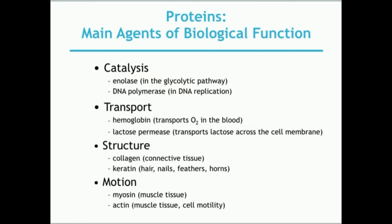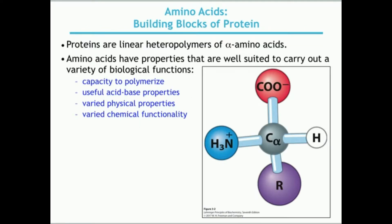What are proteins used for? The first point on this slide basically sums it up: proteins are linear heteropolymers of alpha amino acids. Just as you would see beads on a string on a necklace, proteins are strings of amino acids that have been polymerized together. They can be very small or very large, and we'll look at that in another video.